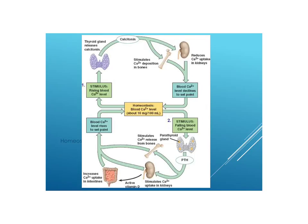Here's one example of a negative feedback system: blood calcium level, homeostasis of blood calcium. If the calcium level is rising — let's say you just had a milkshake — the thyroid gland is stimulated to release a hormone called calcitonin. Calcitonin stimulates the bone to take up the excess calcium and also reduces calcium uptake in the kidneys, which results in blood calcium levels declining.